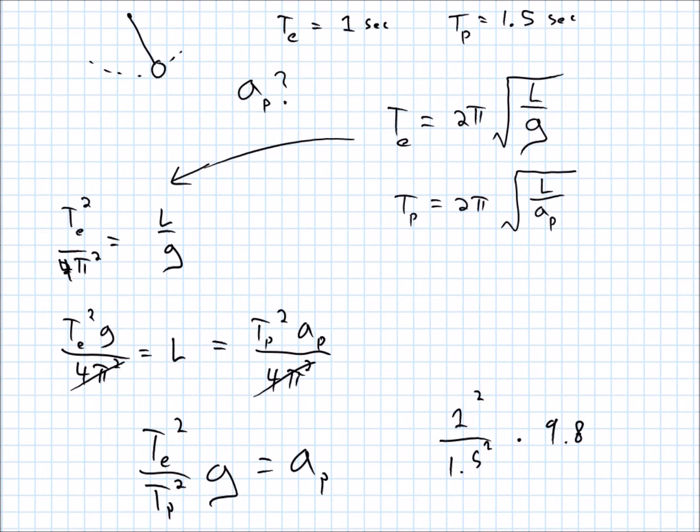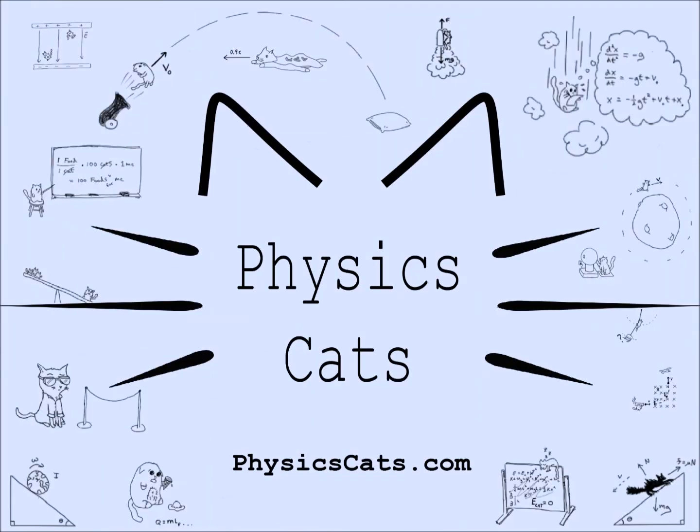And so, we are going to get that this planet has less gravity than Earth does, which, I guess, makes sense, right? It takes the pendulum longer to swing. It's moving slower in general, not accelerating as quickly, because there is less gravity on this planet. All right.